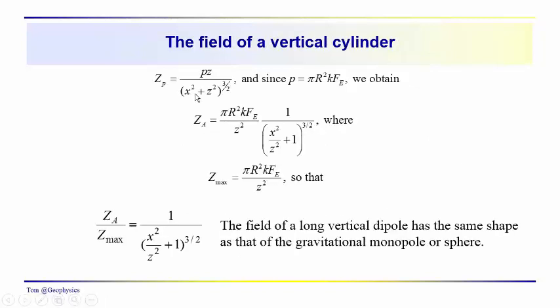Now we did this before, and this should start looking familiar to you. This is the field of a monopole, whether it's a gravitational monopole or a magnetic monopole, turns out to be the same, not surprisingly. Of course, we have a different term here in the numerator. We've got the pole strength, and we remember that the pole strength equals the area times the susceptibility times the intensity of the magnetizing field.